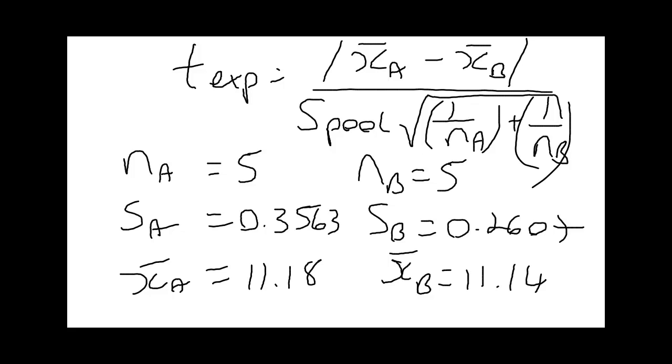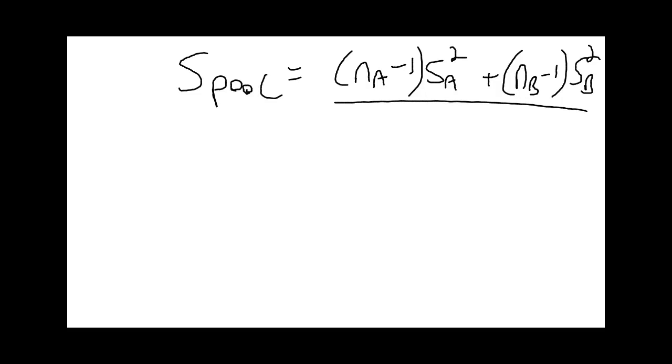First we calculate the pooled standard deviation. This is kind of like a weighted average of the variances. The pooled standard deviation is nA minus 1 (the degrees of freedom for data set A) times the standard deviation of A squared, plus nB minus 1 times the standard deviation of B squared, divided by the total degrees of freedom, which is nA plus nB minus 2. Each data set you subtract 1, so with two data sets you subtract 2. Then we square root that whole thing.